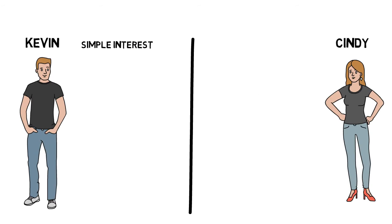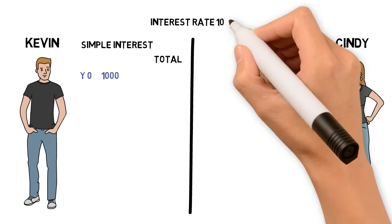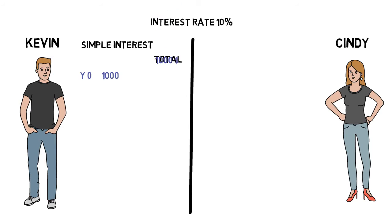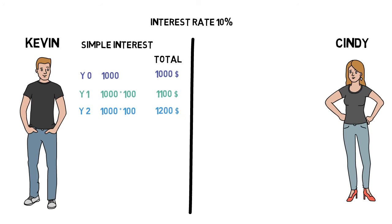Meet Kevin and Cindy, who are both 30 years old and want to invest during 30 years for their pensions. Kevin has got $1,000 to invest and on this money he will get a 10% interest rate, equivalent to $100. Every year, Kevin withdraws the interest from the account but leaves the initial investment — the principal of $1,000. After one year, Kevin gets $100 of interest and has $1,100 in total. After the second year, he gets $100 of interest again and has $1,200 in total. After three years, the same thing happens and he has $1,300.